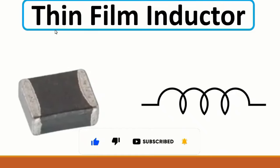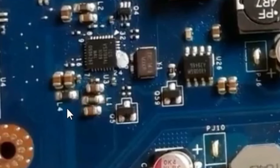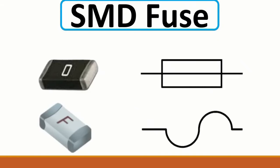Then we have another kind of inductor: the thin film inductor, like this one, this one, and also this one - with references L4 and L1. Those are capacitors. We also have SMT fuses - it has two symbols: one with a line or another symbol. Here 'F' means fuse.